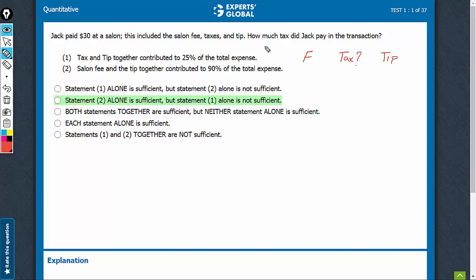Let's look at statement 1. Tax and tip together contributed 25%. So these two together are 25% of $30, whatever 7.5 it is, but we don't know how much was tax and how much was tip. Therefore, statement 1 is not sufficient.